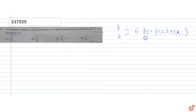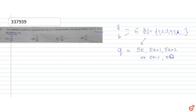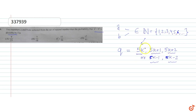If you pick any natural number q, it can be written as a multiple of 5k, or 5k plus 1, or 5k plus 2, or 5k minus 1, or 5k minus 2. These are all the possible remainders when you divide any number by 5: 0, 1, 2, minus 1, and minus 2.